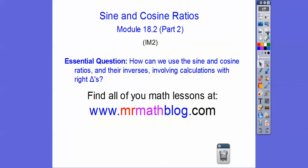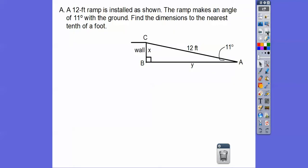Let's get started with part two of this lesson, the applications. Here we have a 12-foot ramp. The ramp makes an angle of 11 degrees. Find the dimensions to the nearest foot. It looks like we're going to find this dimension x and this one here y. Remember, sine is opposite over hypotenuse, cosine is adjacent over hypotenuse, tangent is opposite over adjacent.